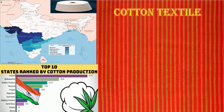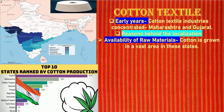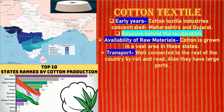In the early years, cotton textile industries were mostly concentrated in Maharashtra and Gujarat. The reasons for this localization include: first, availability of raw materials — due to favorable soil type and climatic conditions, cotton is grown in vast areas in these states. Second, transport — these states are well connected to the rest of the country by rail and road, and have many large ports from which finished products can be easily transported.